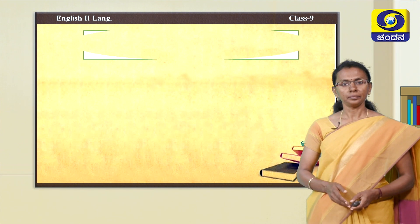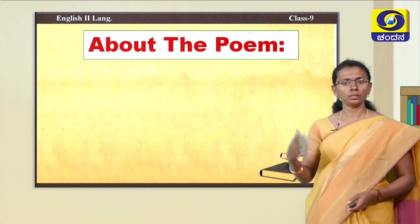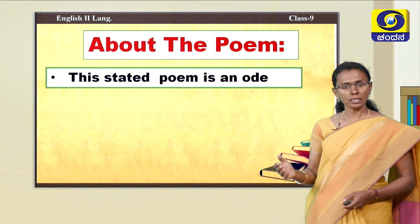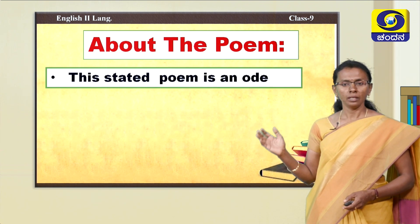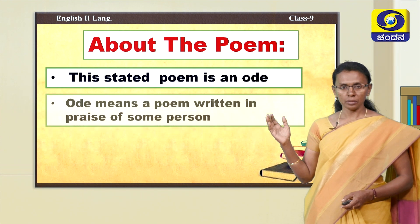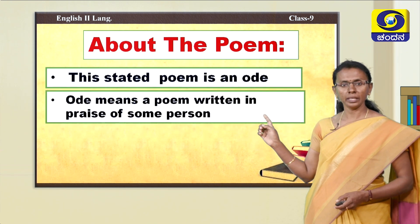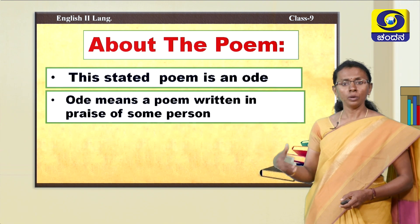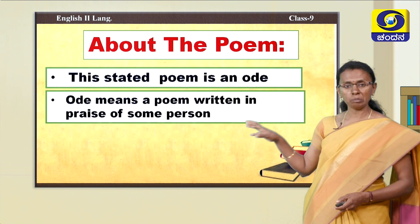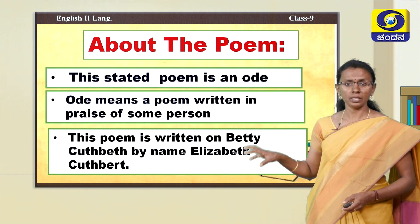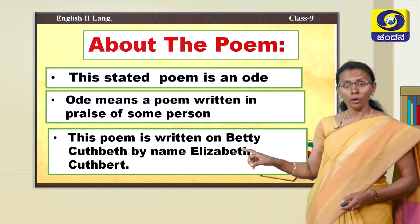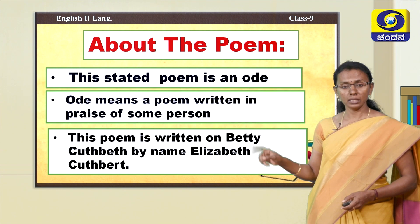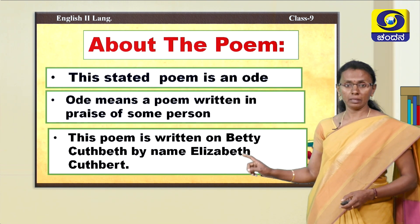This is what the poem was. Now let's see what the poem is about. This poem is an ode — what is an ode? An ode means a poem written in praise of some person. Here whom are we praising? Let's see who that person is. This poem is written on Betty Cuthbert — this is very important, it is all about Betty Cuthbert by name Elizabeth Cuthbert.